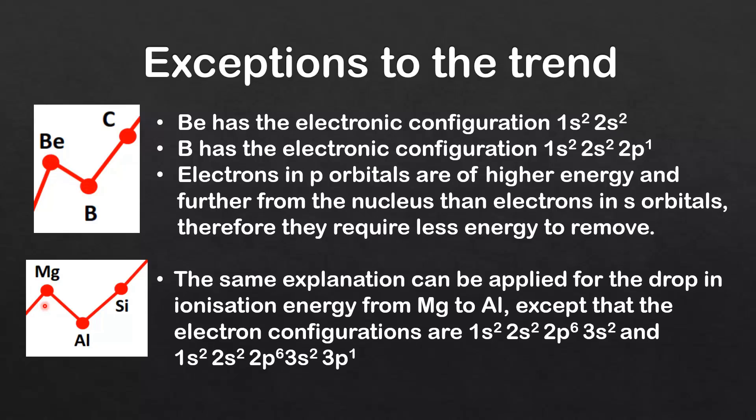Next we'll have a look at the reason for the decrease in ionization energy between magnesium and aluminium. The same explanation can be applied for the drop in ionization energy from magnesium to aluminium, except the electron configurations are different.